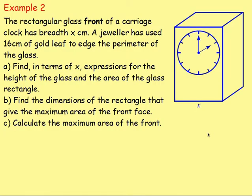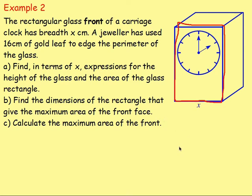Example two: the rectangular glass front of a carriage clock has breadth x centimetres. The jeweller has used 16 centimetres of gold leaf to edge the perimeter of the glass. Find expressions for the height and area of the glass rectangle. Then find the dimensions of the rectangle that give the maximum area, and calculate that maximum area.